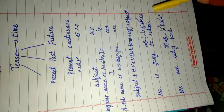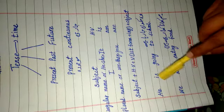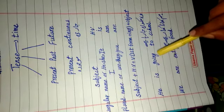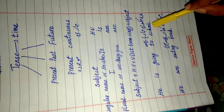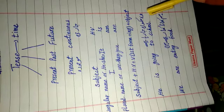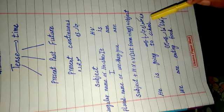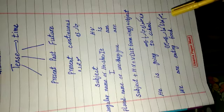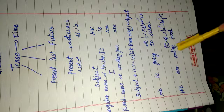For example: 'Wo school ja raha hai.' Here, 'wo' is the subject because it is performing the action. 'Ja raha hai' is the action word — the verb. And 'school' is the object because the work is going on at school. The translation is: He is going to school. Next, 'Hum khana kha rahe hain' — here, according to 'hum', we use the helping verb 'are'. We are eating food.